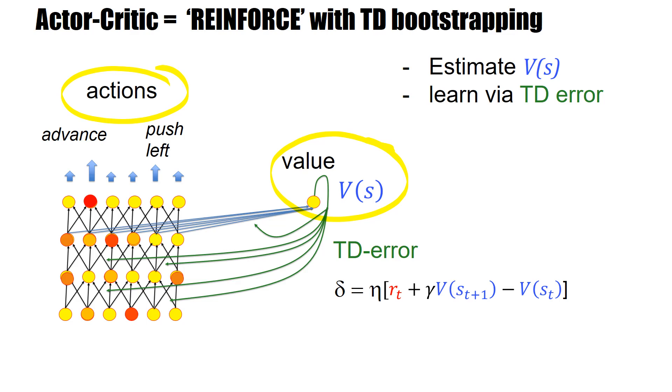Now the way that reinforce with subtraction of a baseline estimated this V-value was the Monte Carlo estimation methods. Monte Carlo estimation methods are not the only possibility. We have seen that we can also estimate the V-values using the TD error method.